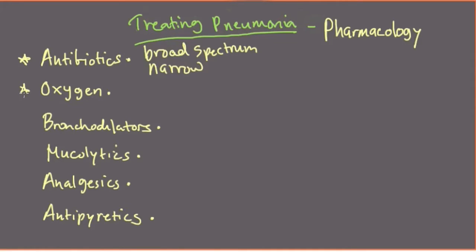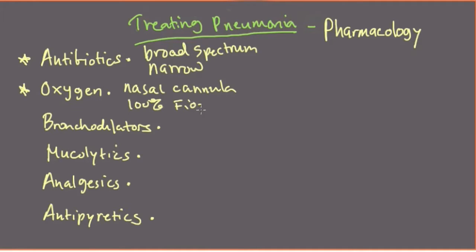Another mainstay of pneumonia treatment is oxygen. With supplemental oxygen you can go anywhere from a nasal cannula — little prongs in the nose, which is pretty well tolerated — all the way up to intubation and 100% fraction of inspired oxygen. In the middle you have lots of other modalities you can use.